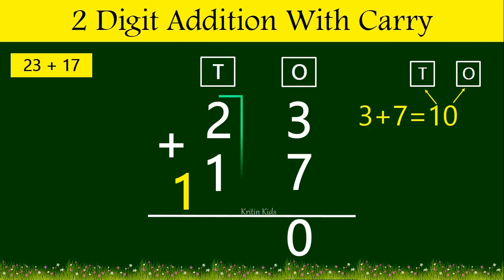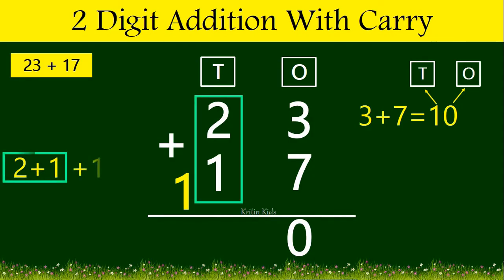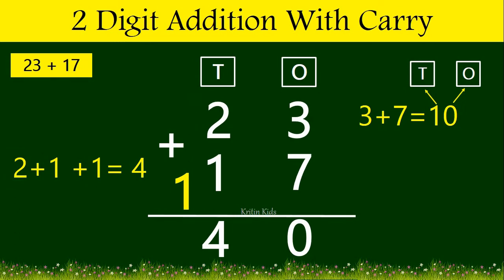Now let's add numbers at the tens position. 2 plus 1 plus 1 carry is equal to 4. So 23 plus 17 gives us 40.